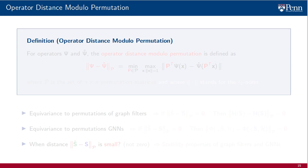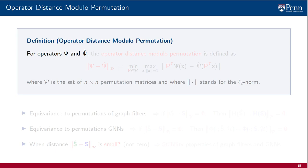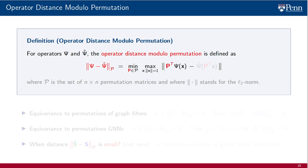The ability to exploit quasi-symmetries hinges on our ability to establish stability to deformations, so that we have approximate equivalence when we have graphs that are close to permutations of each other, instead of perfect permutations of each other. This brings us to the notion of operator distance modulo permutation, to measure how far operators are from being permutation equivariant. Given operators psi and psi-hat, the operator distance modulo permutation between psi and psi-hat is defined as the minimum over all permutations of the maximum over all vectors x with unit norm, of the norm of the difference between p-transpose times psi applied to x and psi-hat applied to p-transpose x.